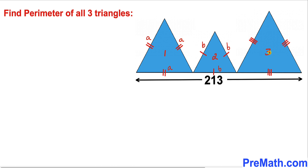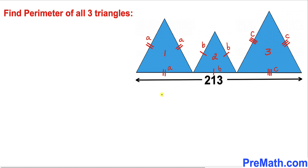And finally in triangle three, let me call this side length C. Since this is an equilateral triangle as well, all sides are C. Now let's focus on the whole base from here all the way to here. This is the sum of A plus B plus C, which is equal to 213. Therefore I can write A plus B plus C equals 213. Let me call this equation one.